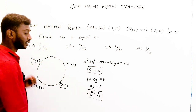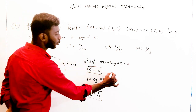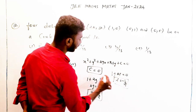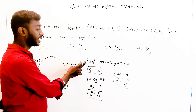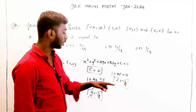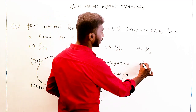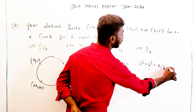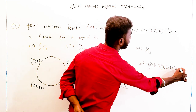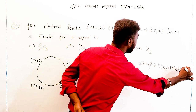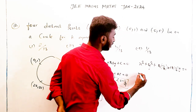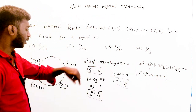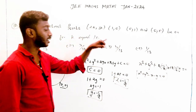Next, substituting (0, 1) into the circle equation: x is 0, y is 1, giving 0 + 1 + 0 + 2f + c = 0, so f = −1/2. Now I know c = 0, g = −1/2, f = −1/2. The equation of the circle becomes x² + y² + 2(−1/2)x + 2(−1/2)y + 0 = 0, which simplifies to x² + y² − x − y = 0. This point (2k, 3k) also lies on the circle.